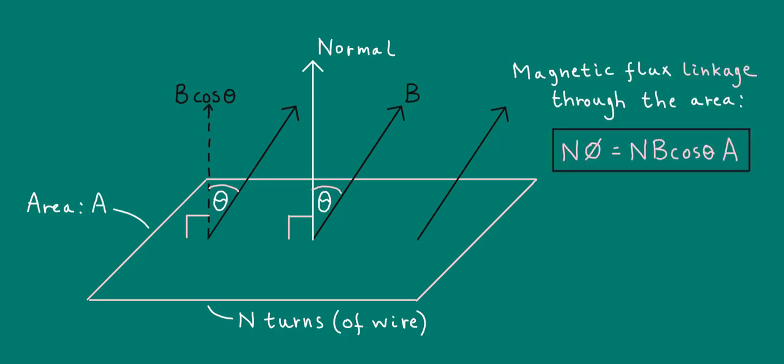Magnetic flux linkage is given by N, the number of turns, multiplied by the magnetic flux phi. So to calculate flux linkage, all you have to do is calculate the flux, magnetic flux as discussed previously, and then just multiply by N, the number of turns. Everything we said previously about magnetic flux holds true for flux linkage as well. For example, the flux linkage can be negative. The flux linkage varies as a cosine graph with angle theta, and so on.